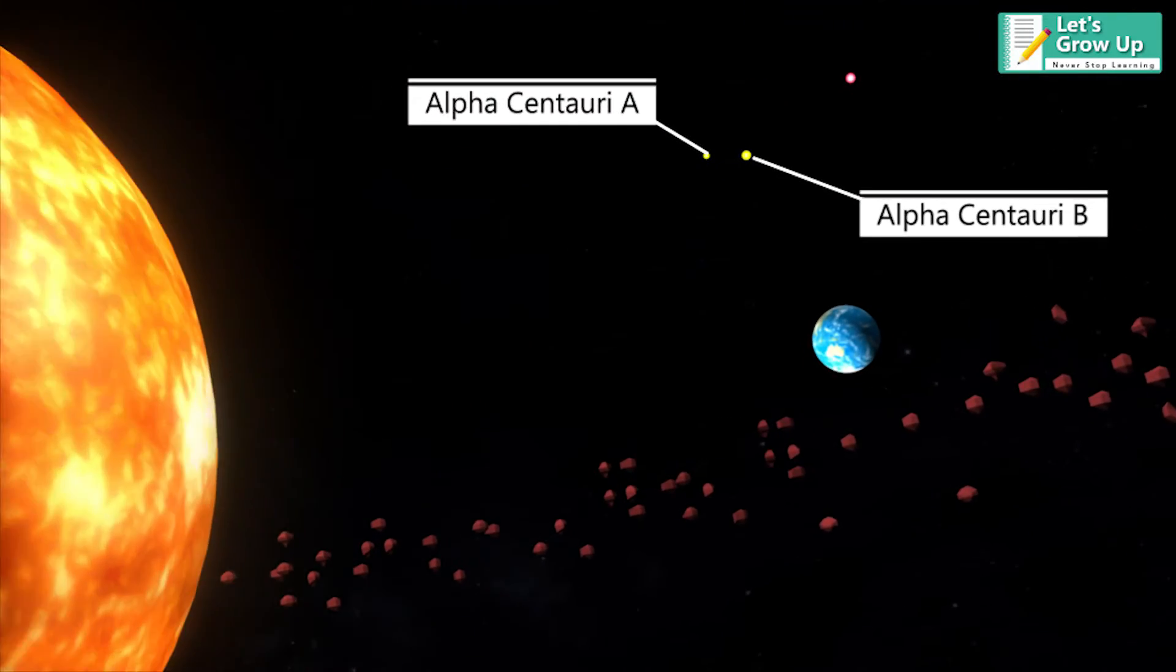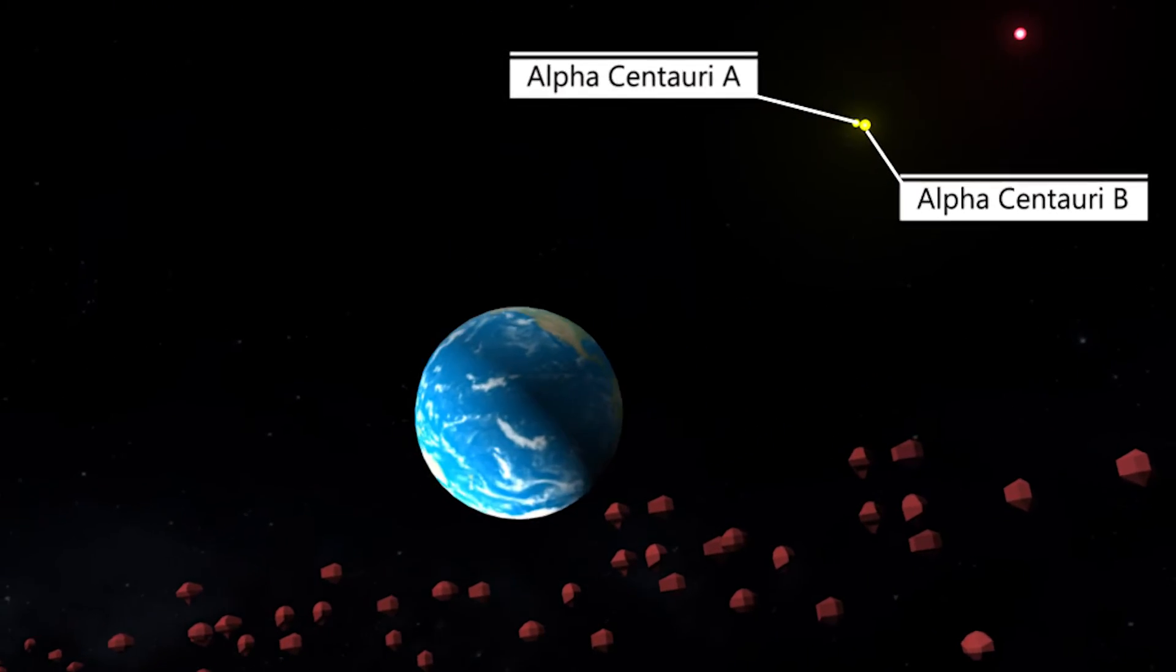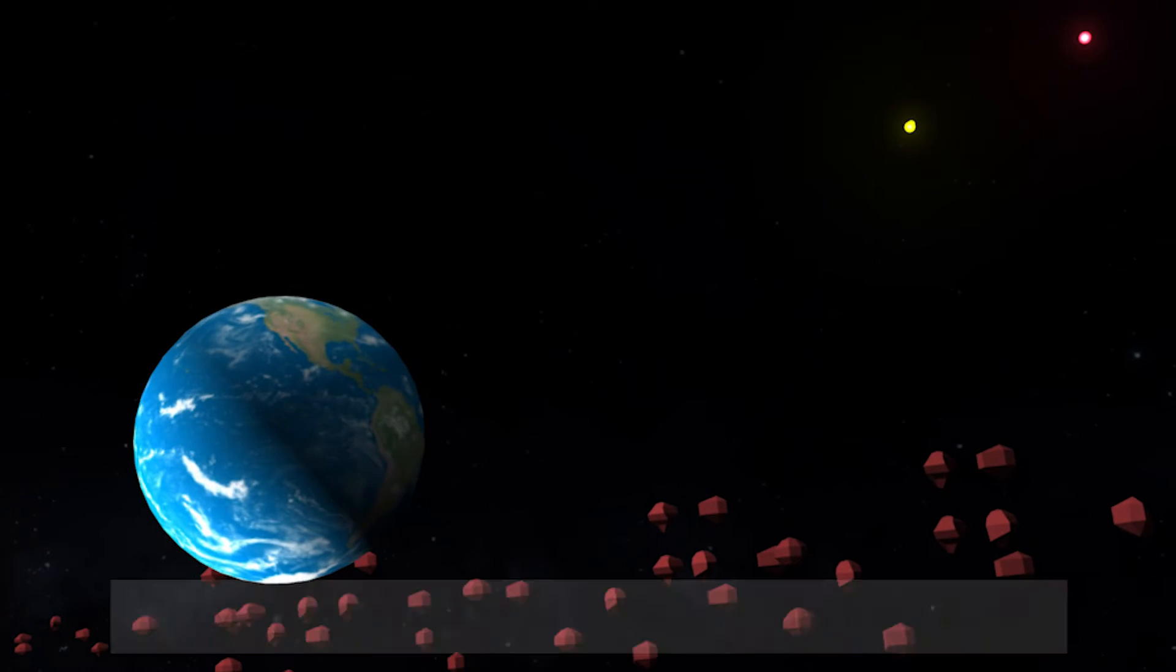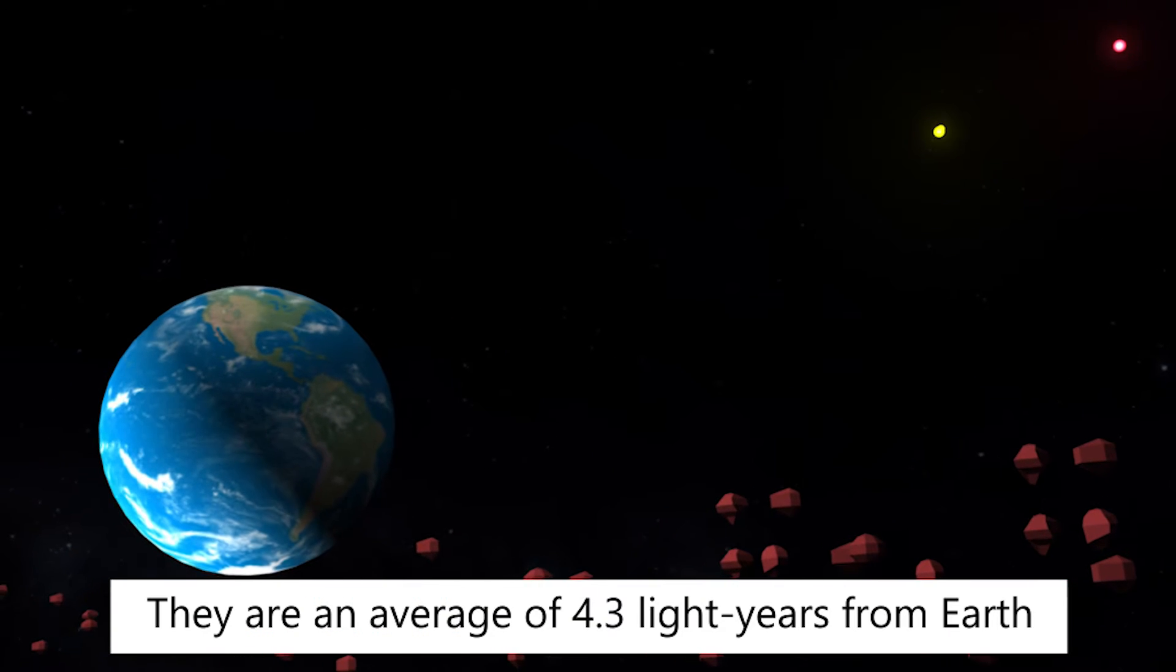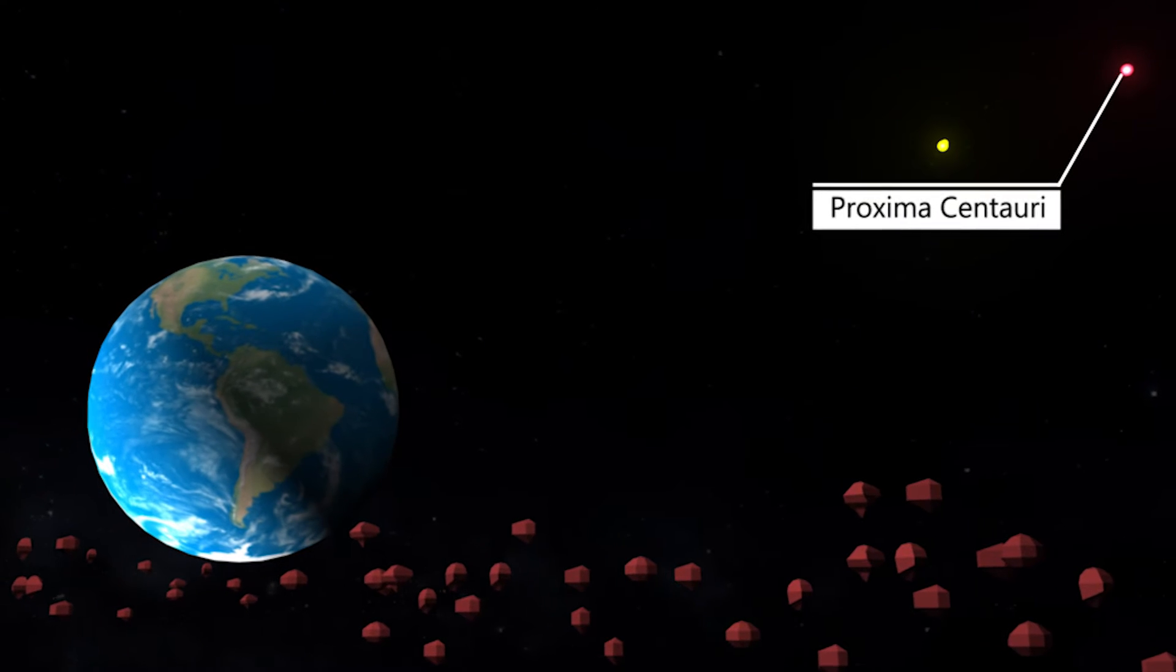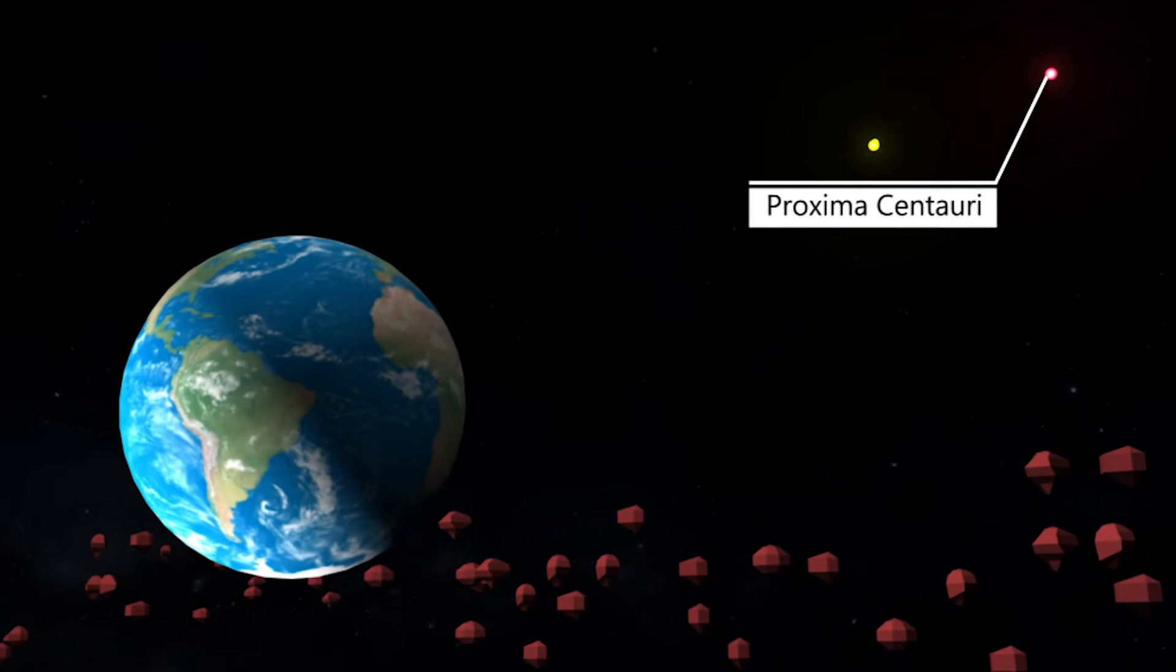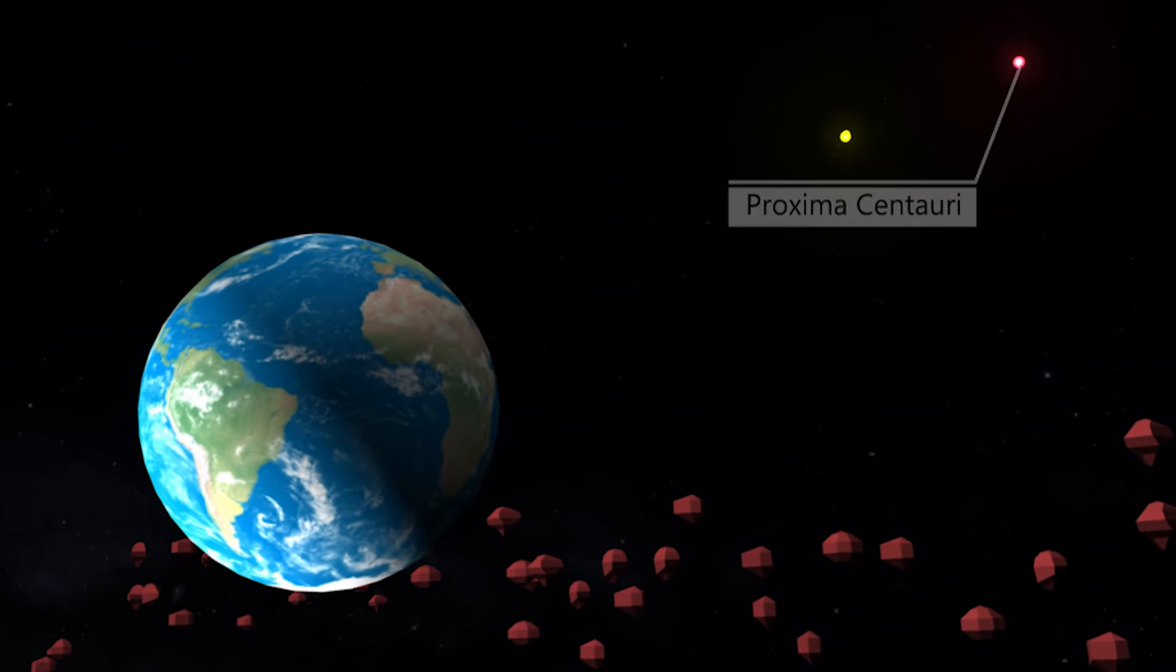Two main stars are Alpha Centauri A and Alpha Centauri B which form a binary pair. They are an average of 4.3 light years from Earth. The third star is Proxima Centauri. It is about 4.22 light years from Earth and is the closest star other than the Sun.